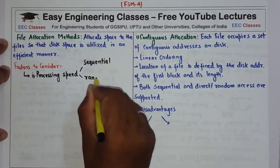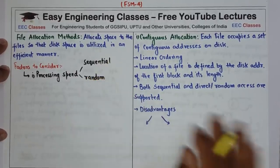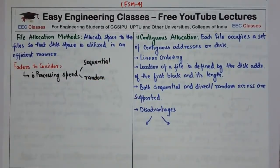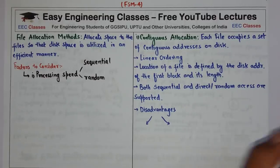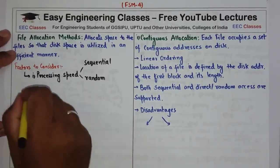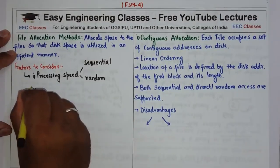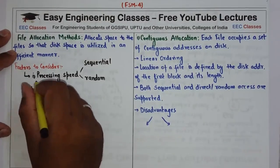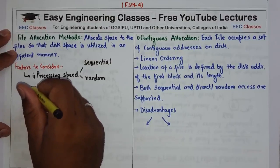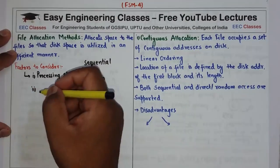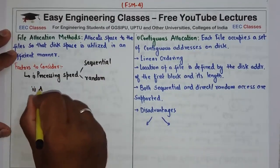Suppose if I am allocating space to a file and after that allocation my sequential or random access is too slow, then that allocation is considered to be inefficient. The second factor is the ability to make use of multi-sector and multi-track transfer.